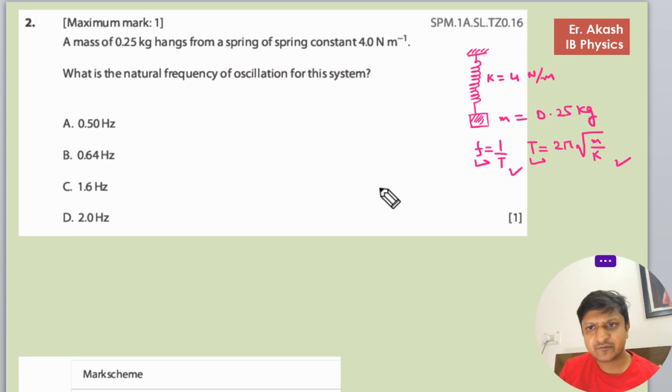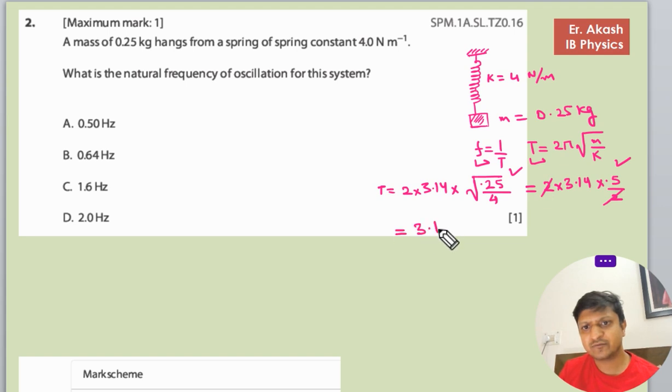T equals 2π, and π is 3.14, into the root of mass 0.25 divided by k which is 4. So this becomes 2 into 3.14 into 0.5.